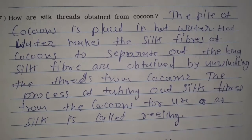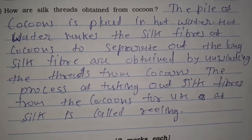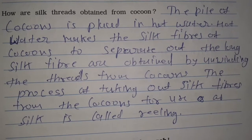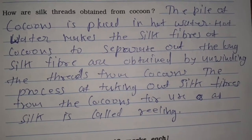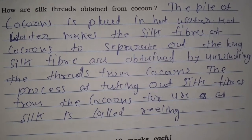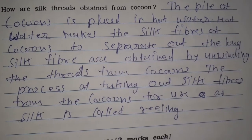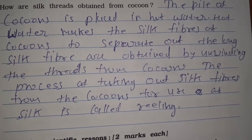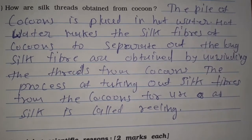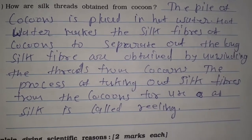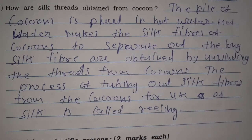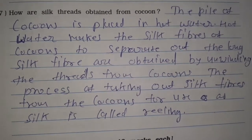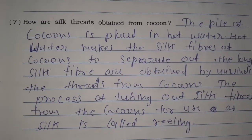The pile of cocoons is placed in hot water. Hot water makes the silk fibers of cocoons separate out the long silk fibers. They are obtained by unwinding the threads from cocoons. The process of taking out silk fibers from the cocoons for use as silk is called reeling.